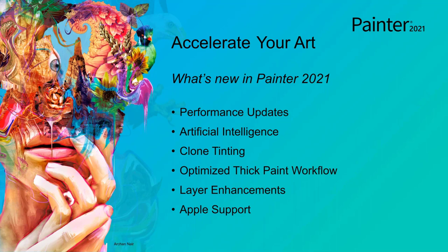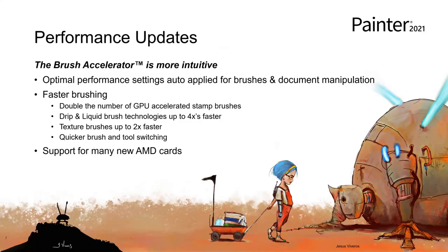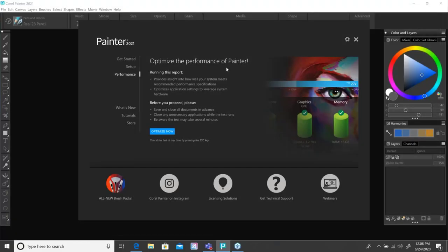And then there's clone tinting. We'll show you how great this is, whether you have a black and white image that you want to fully colorize, or maybe there are just certain elements within a painting or photo that you want to tint. It's very quick and easy with these new clone tinting brushes. And then thick paint workflow — we've revamped all of the brushes in the thick paint category to look more realistic, so the end result looks better without you having to tweak. We also have a new thick paint compatible category with new brushes. There are layer enhancements, Apple Sidecar support, and Scott is going to show all that off.